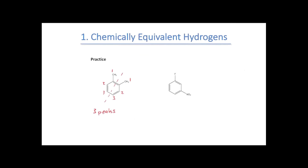Looking at our final example, we have a fluoro substituent group and a nitro substituent group. Since we have two different substituent groups, there are no mirror planes in this molecule. So all of the hydrogens are different from each other on the aromatic ring. We can get one type of hydrogen for the carbon between the two substituent groups, then a second, a third, and a fourth type — ending up with four peaks in our NMR spectra. It doesn't matter how you number the different hydrogens around the ring, just as long as you can keep track of the types. When the substituents become different from each other, we lose symmetry, and when we lose that symmetry, we start to have more peaks in the NMR spectra.